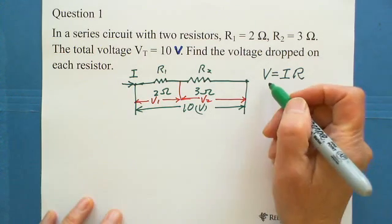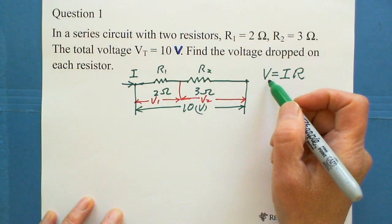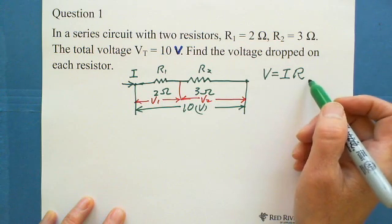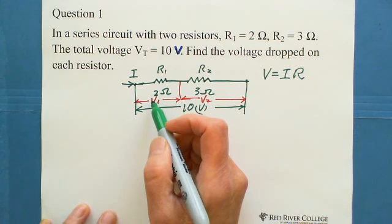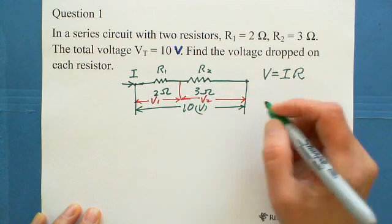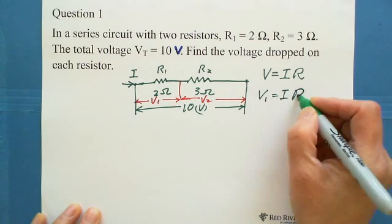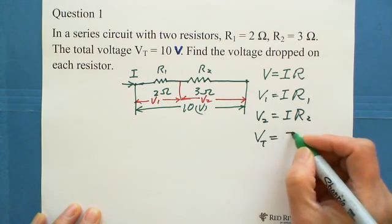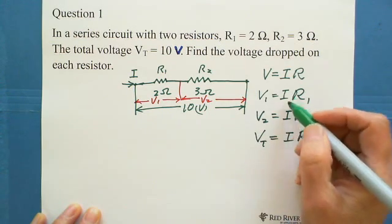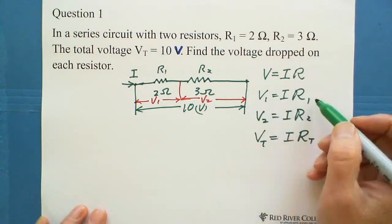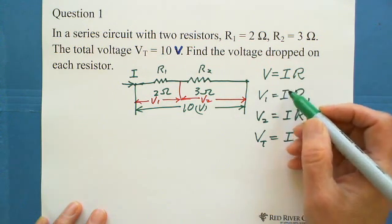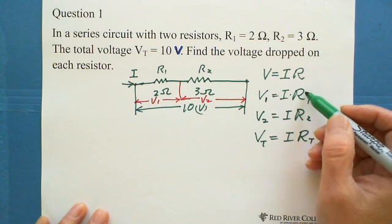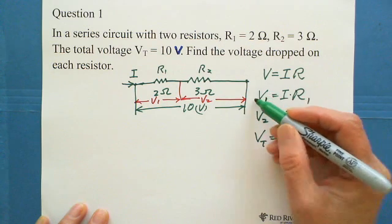To follow Ohm's law, we have V equals current I times R. For this question we can write three formulas: V equals IR is the general formula, V1 equals I times R1, and V2 equals I times R2. Because the current is the same, the voltage is proportional to the resistor — so more resistor means more voltage drop.